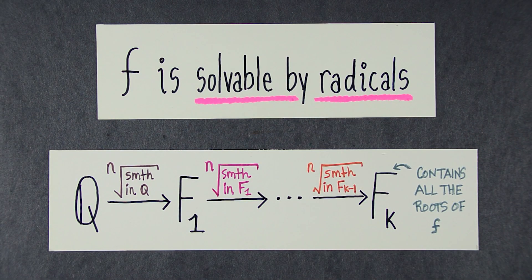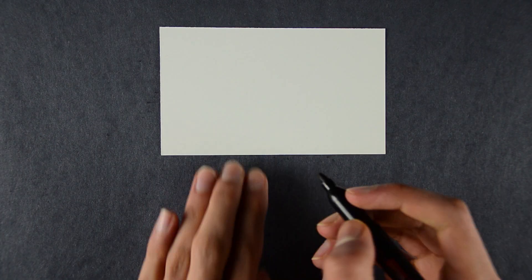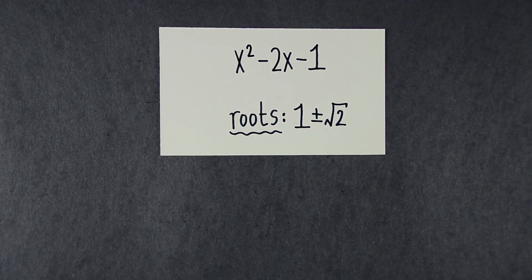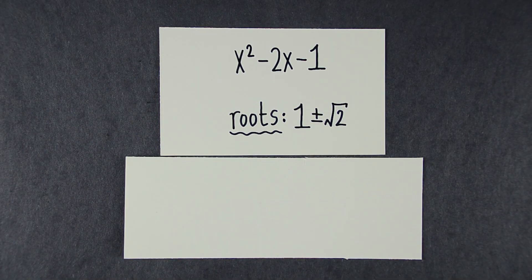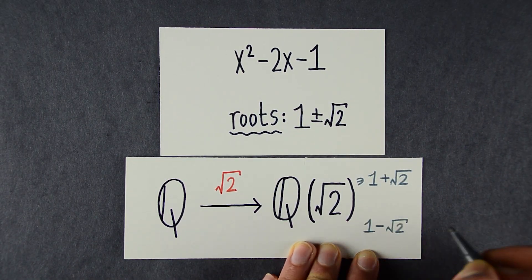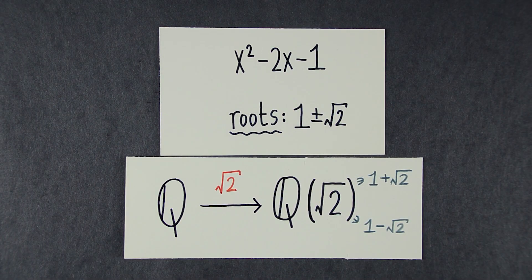An example should clarify. For instance, this polynomial is solvable in radicals. This is because it has roots 1 plus or minus the square root of 2. If we adjoined the square root of 2, Q adjoined root 2 contains both the roots of the polynomial. That means that it's solvable by radicals.